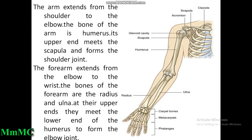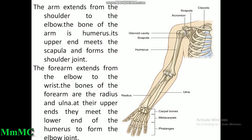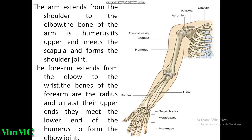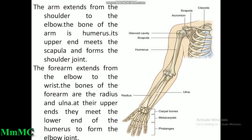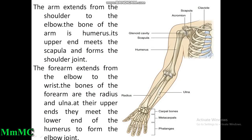The arm extends from the shoulder to the elbow; the bone of the arm is the humerus. Its upper end meets with the glenoid cavity of the scapula and forms the shoulder joint. The forearm extends from the elbow to the wrist. The bones of the forearm are the radius laterally and ulna medially. At their upper end they meet the lower end of the humerus and form the elbow joint.